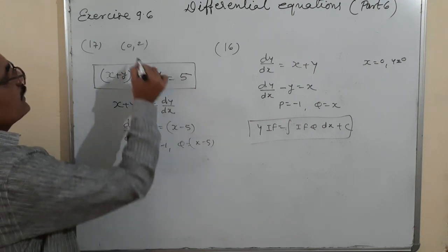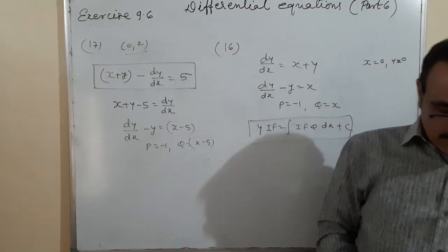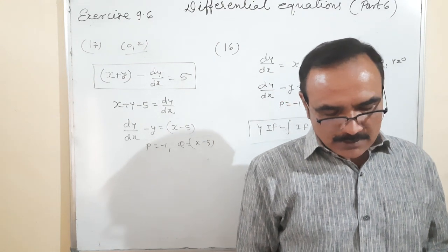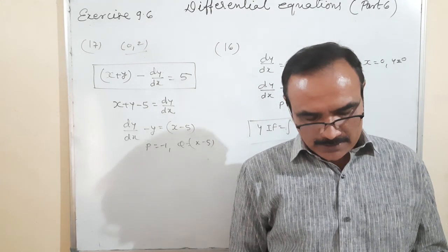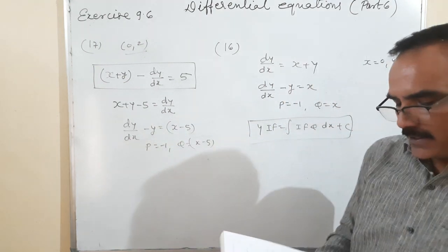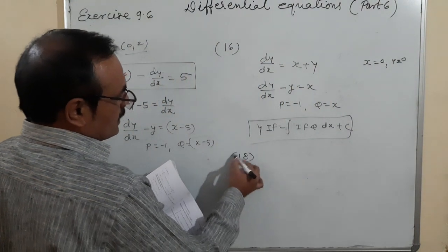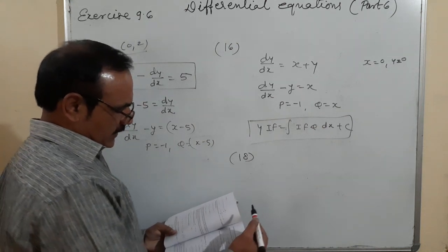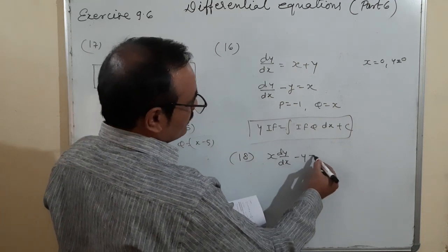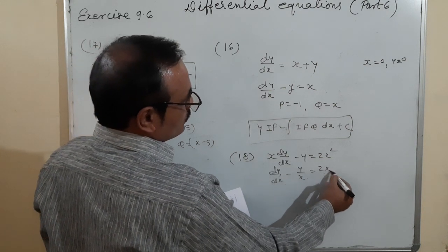Question 17: Find the equation of the curve passing through (0, 2), given that the sum of the coordinates of any point exceeds the slope by 5. So x + y - (dy/dx) = 5, giving dy/dx - y = x - 5, with P = -1 and Q = x - 5, and initial condition x = 0, y = 2.